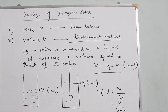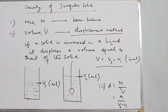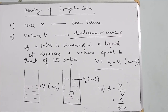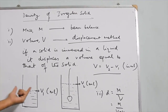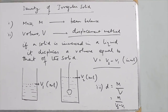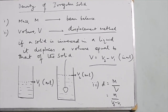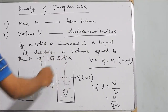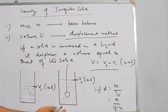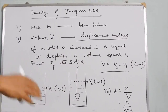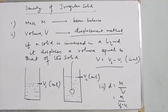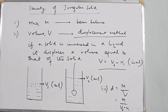Alternatively, we can use a Eureka can. We fill it with liquid until excess drains from the spout, discard that excess, then insert the solid using a thread. The liquid now displaced by the solid comes out of the spout, is collected in a measuring cylinder, and its volume equals the volume of the solid. This is the basic principle of measuring the density of an irregular solid.